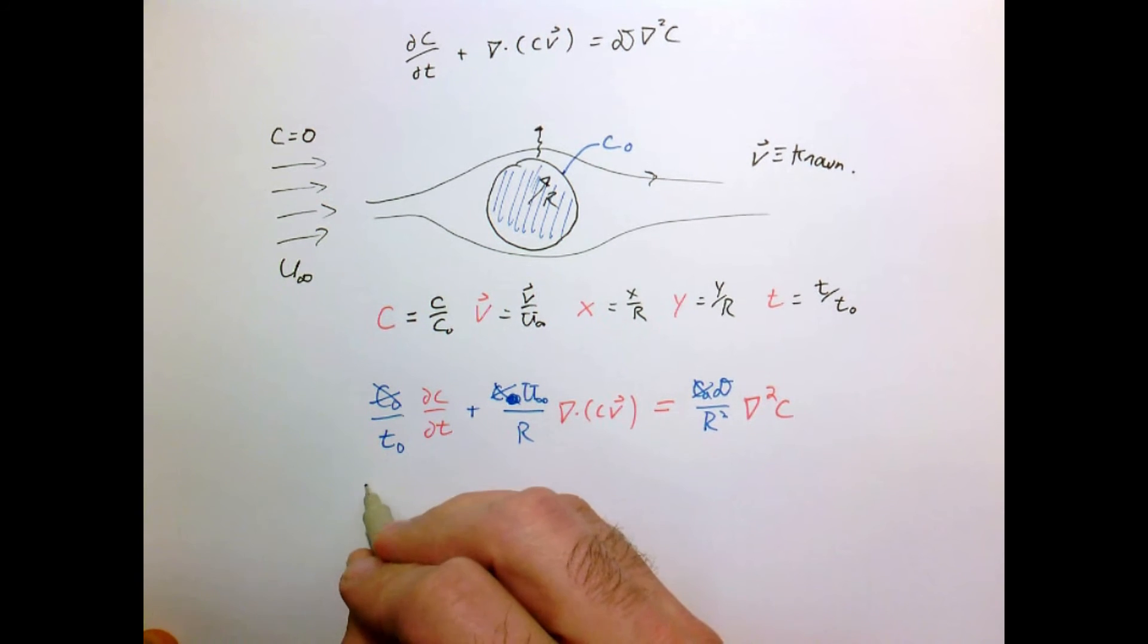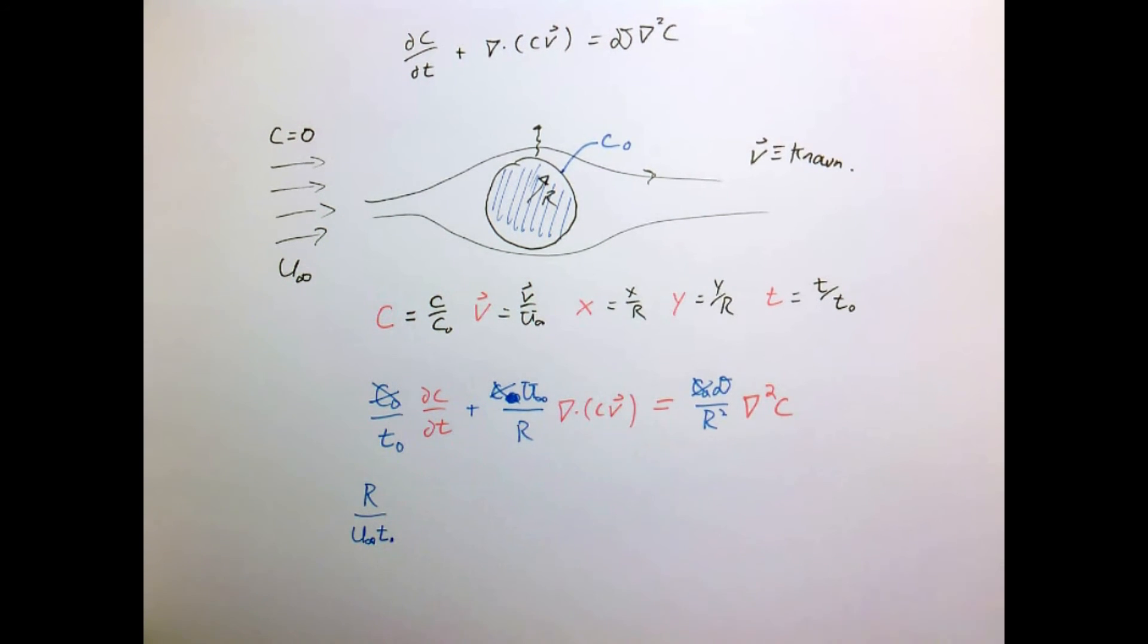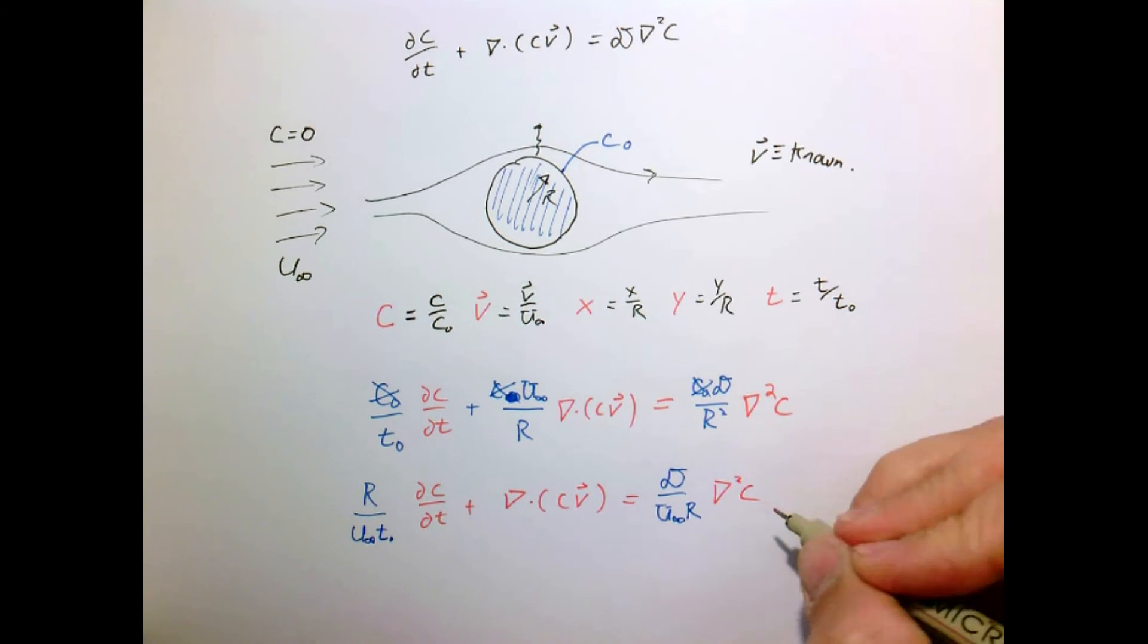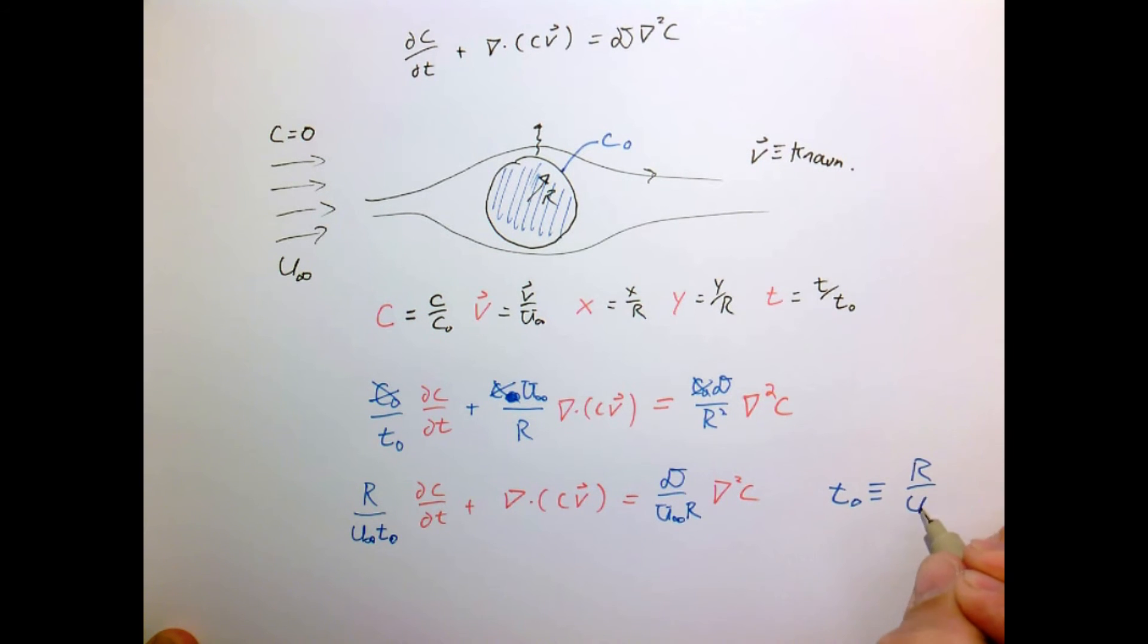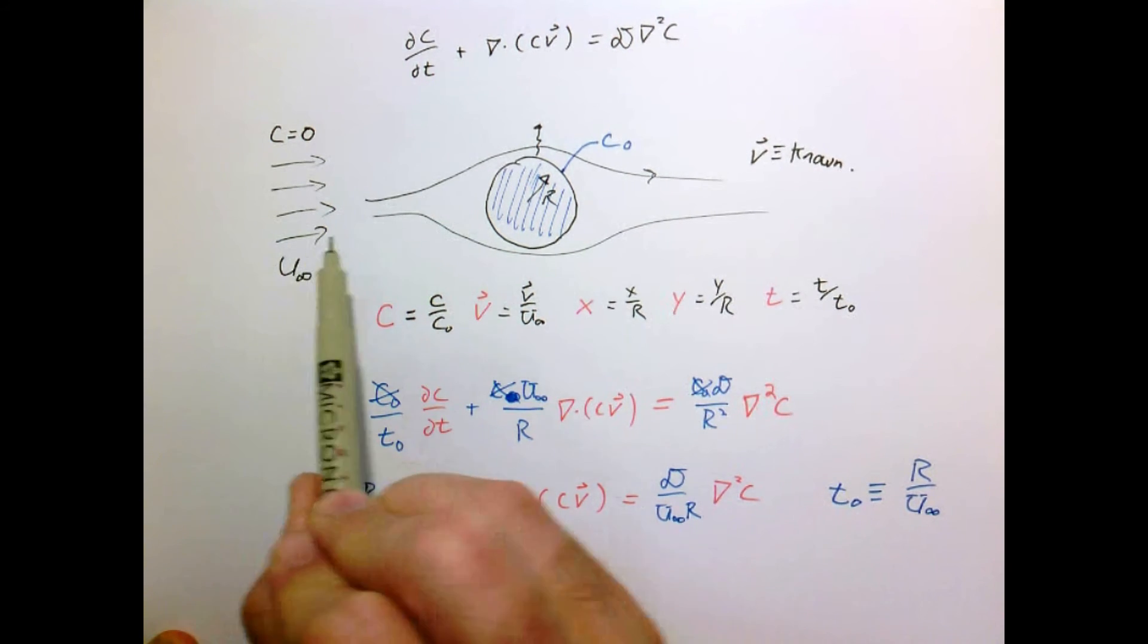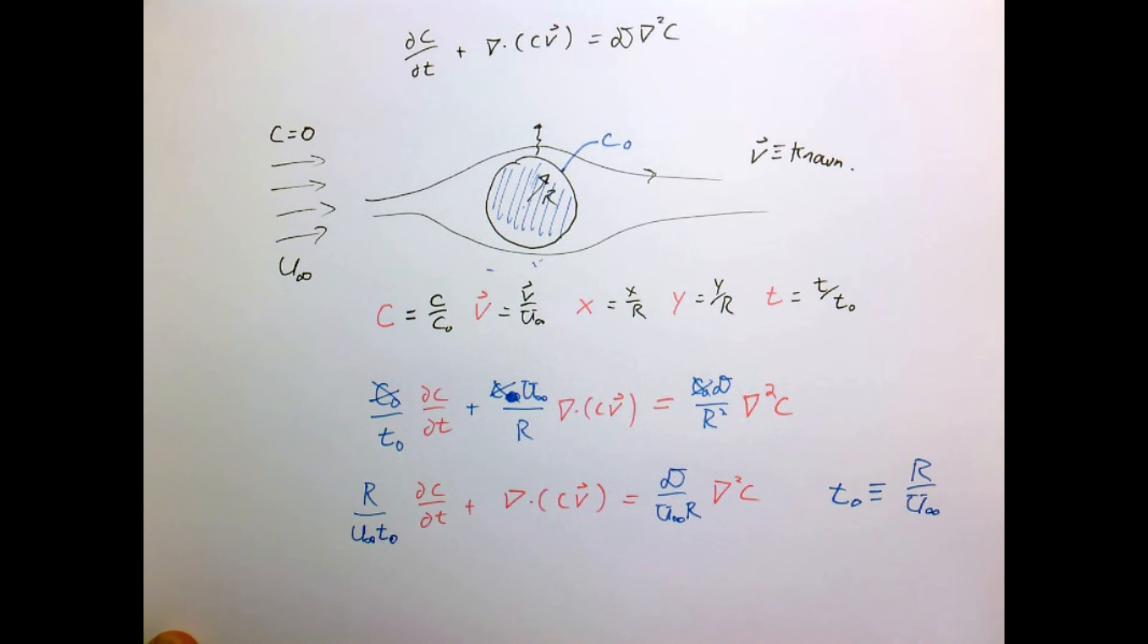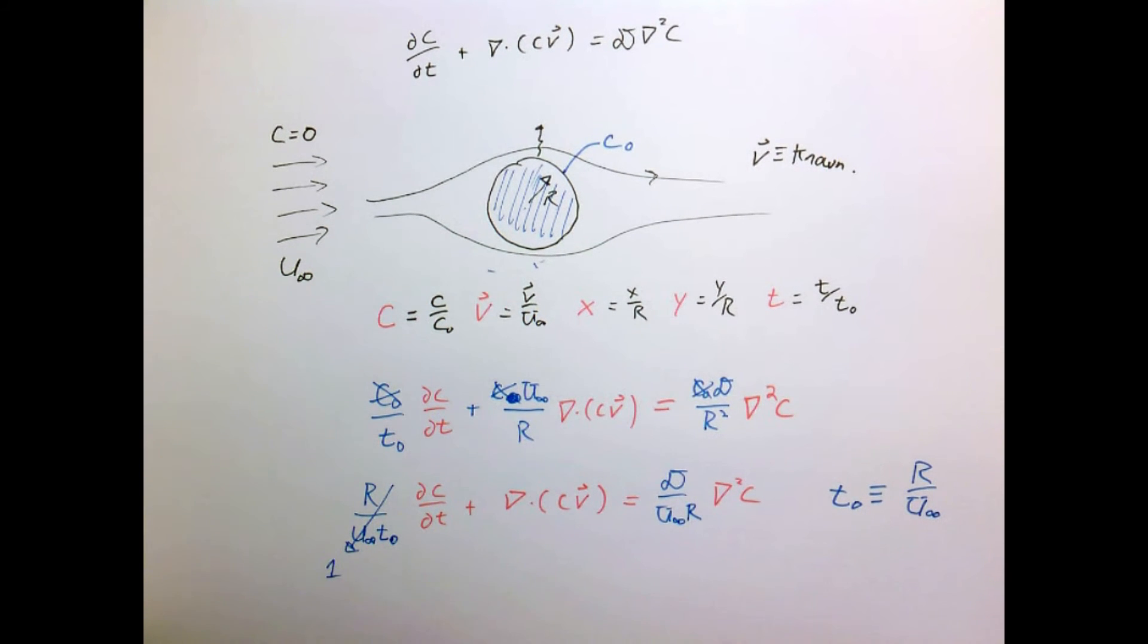As before, we set t naught as some arbitrary constant, so by definition I can set it to whatever I want. I'm going to set it to equal R over U infinity, which has a nice interpretation because the fluid's moving at speed U infinity, this distance is R, so that's the time it takes for the fluid to move across the distance of the sphere. When I make that assumption, this parameter out here becomes one, and we're left with a single parameter called the Peclet number.